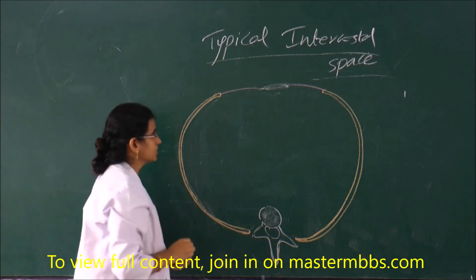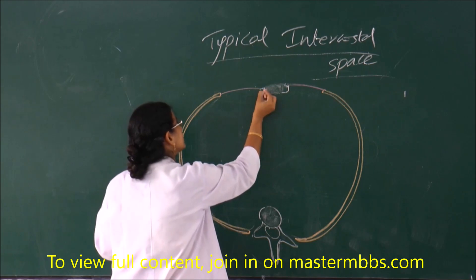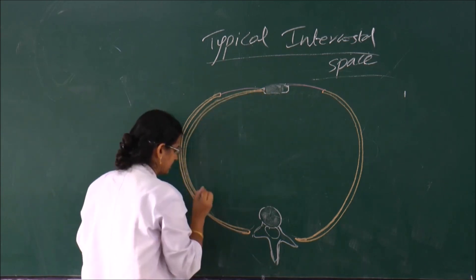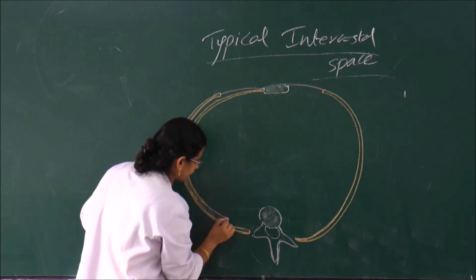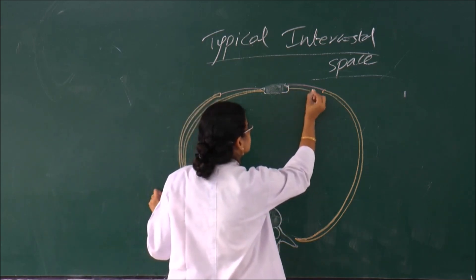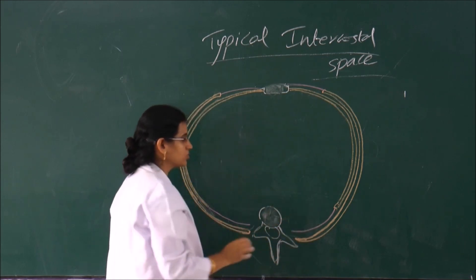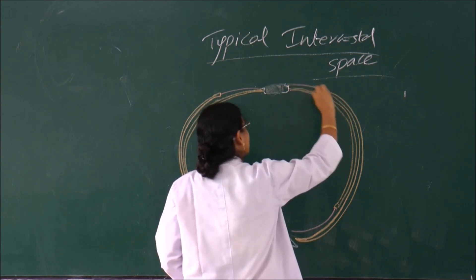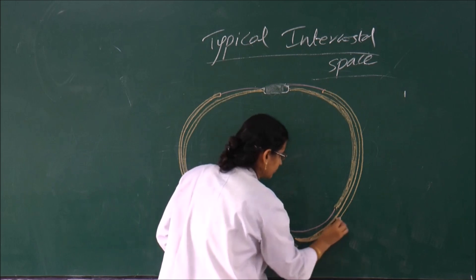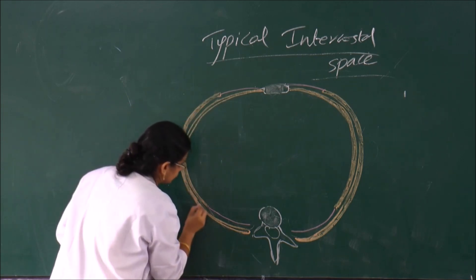Now, what about the internal intercostal muscle? It begins from the sides of the sternum. Internal intercostal muscle begins from here. But as it reaches the angle of the rib — this is all muscle fibres — when it reaches the angle of the rib, it is replaced by a membrane. This membrane is called the internal intercostal membrane, also called the posterior intercostal membrane. I have shaded the muscles because I drew double lines; you can also draw single-line diagrams if you are more comfortable with that. So I have drawn the external intercostal muscle and anterior intercostal membrane.